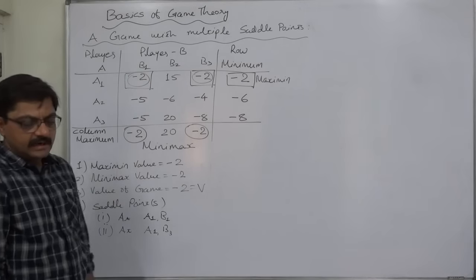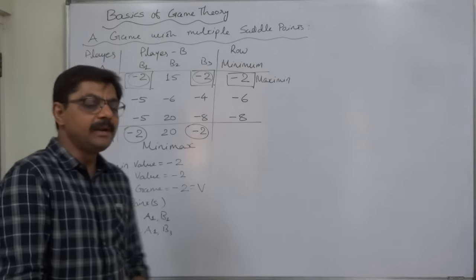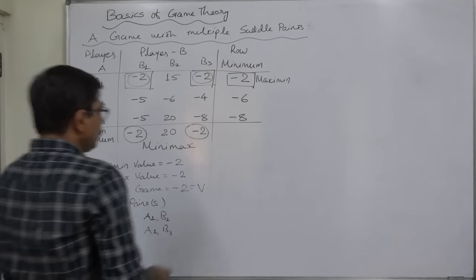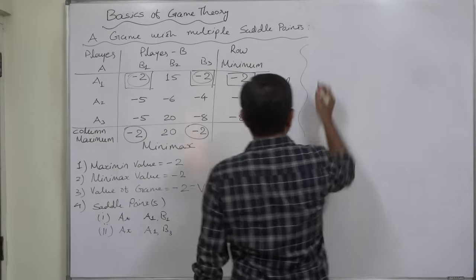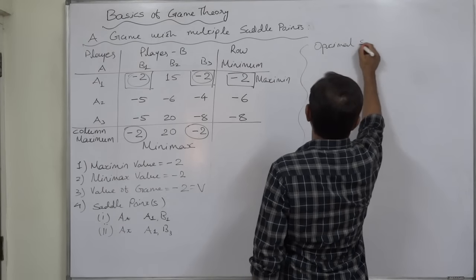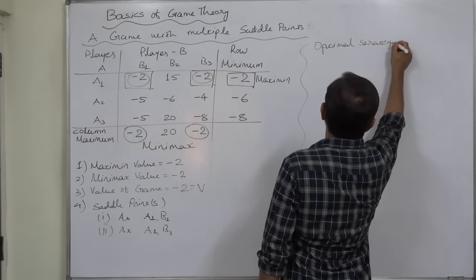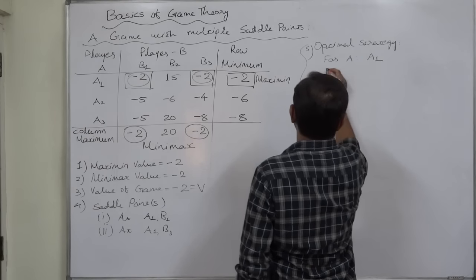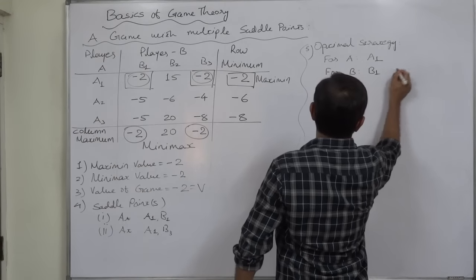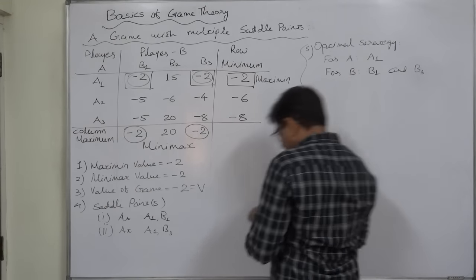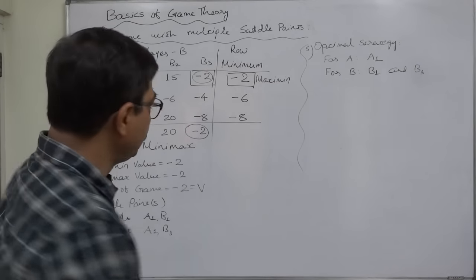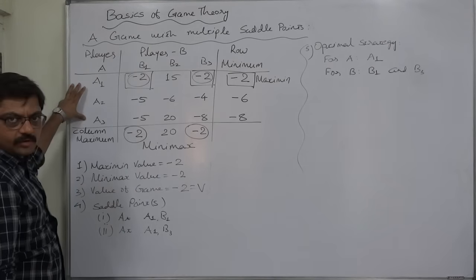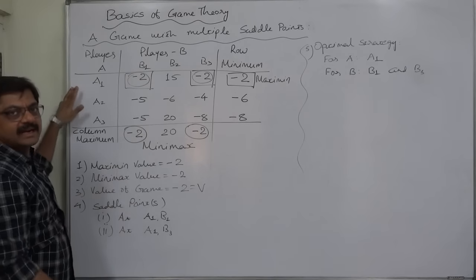Not every game has a saddle point, and similarly not every game has multiple saddle points. Based on the saddle points, we can also comment on the optimal strategies of the two players. For player A, the optimal strategy is A1, and for player B the optimal strategies are B1 as well as B3.